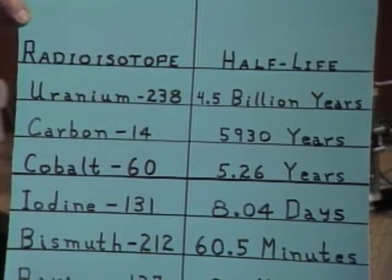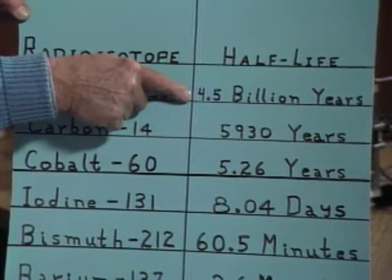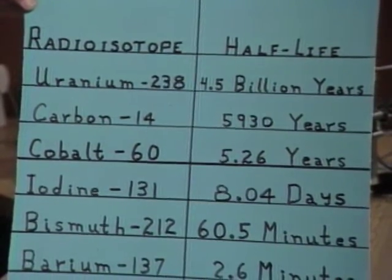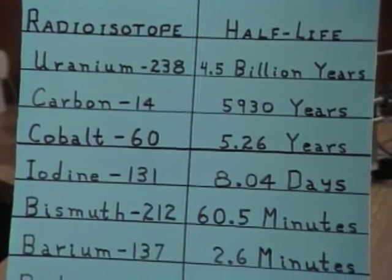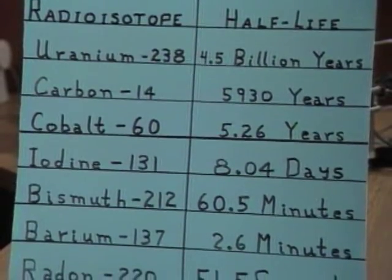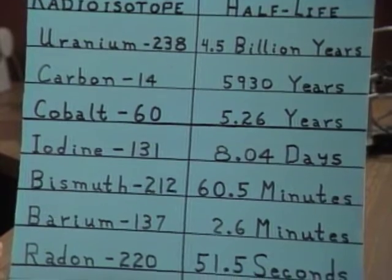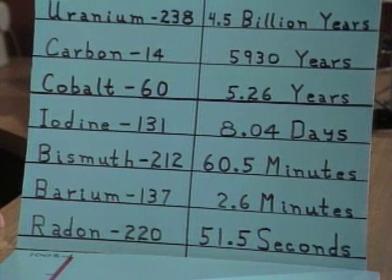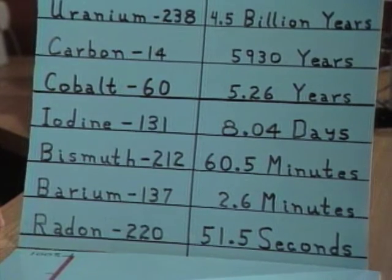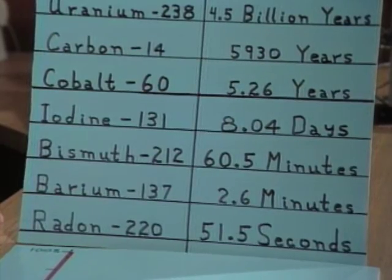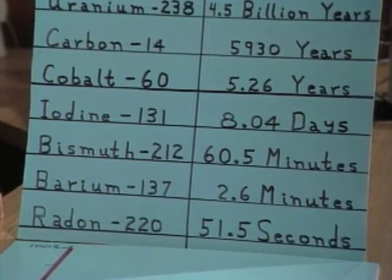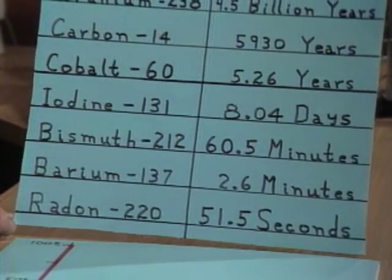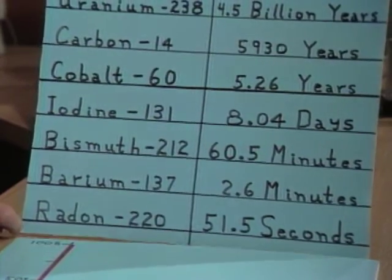Have you ever heard of any of these? Yeah, some of them. Uranium-238 — notice its half-life? 4.5 billion years. Carbon-14, 5,930 years. Cobalt-60, 5.26 years. Iodine-131, 8.04 days. Bismuth-212, 60.5 minutes. Barium-137, 2.6 minutes. Radon-220, 51.5 seconds.